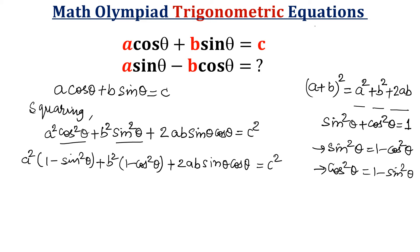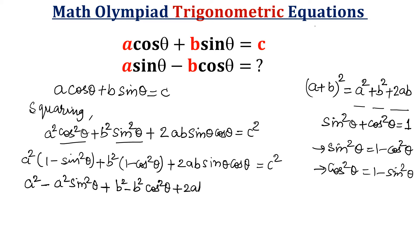Now let us open the brackets. a² times 1 gives a², and a² times sin²θ gives −a² sin²θ. Similarly, b² minus b² cos²θ, plus twice ab sinθ cosθ, is equal to c².